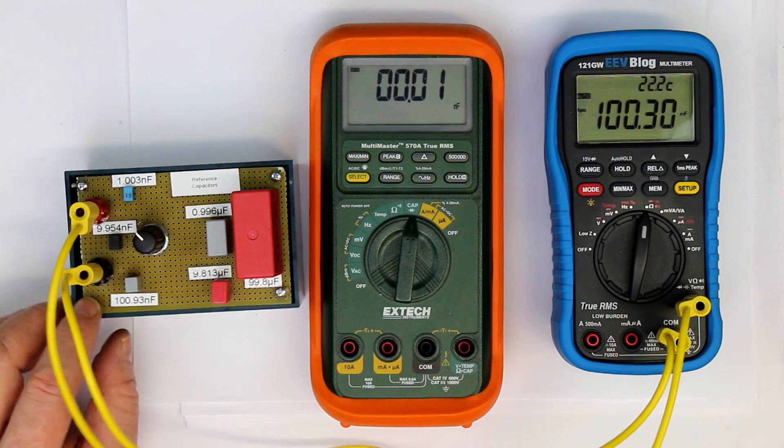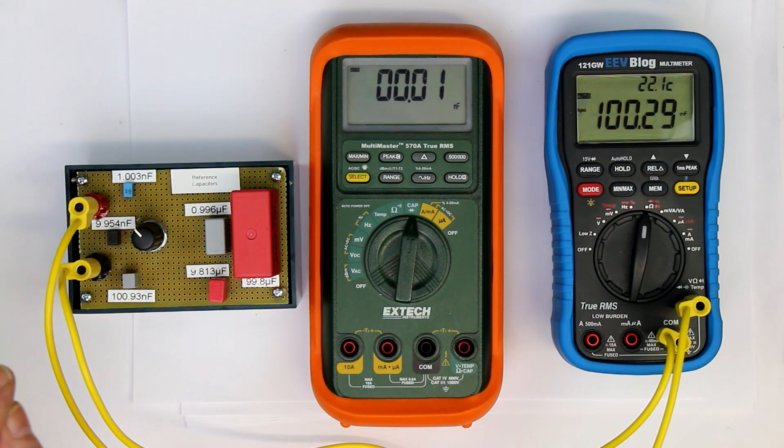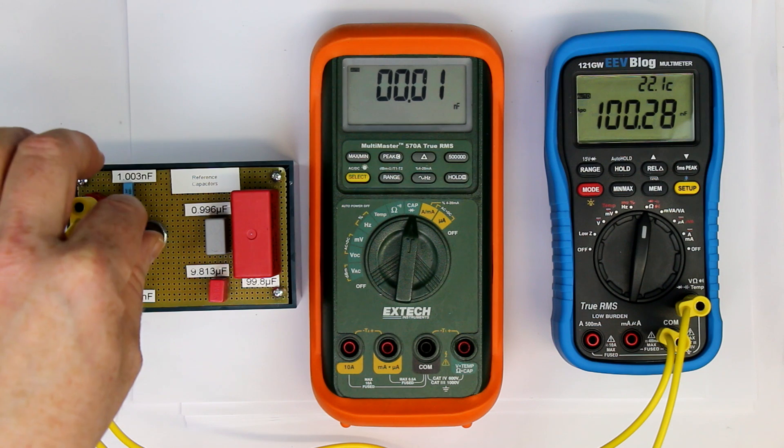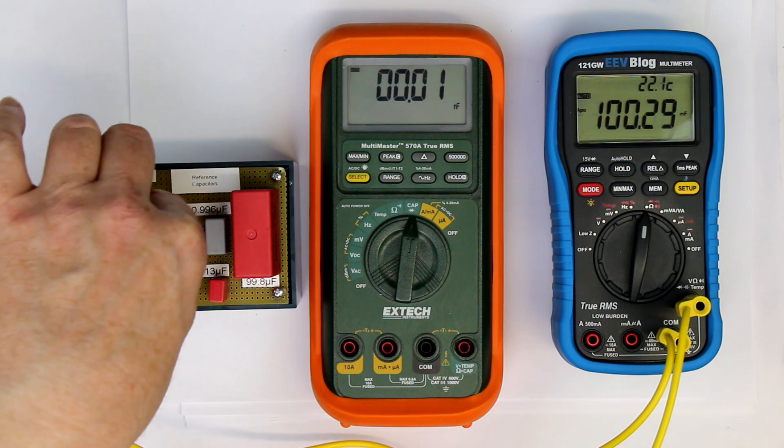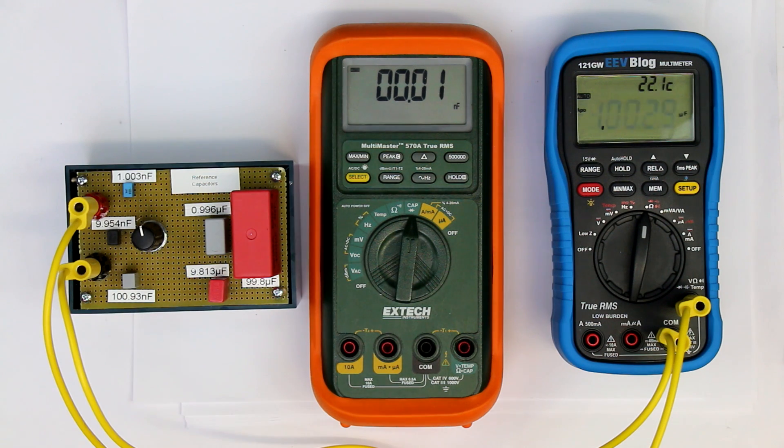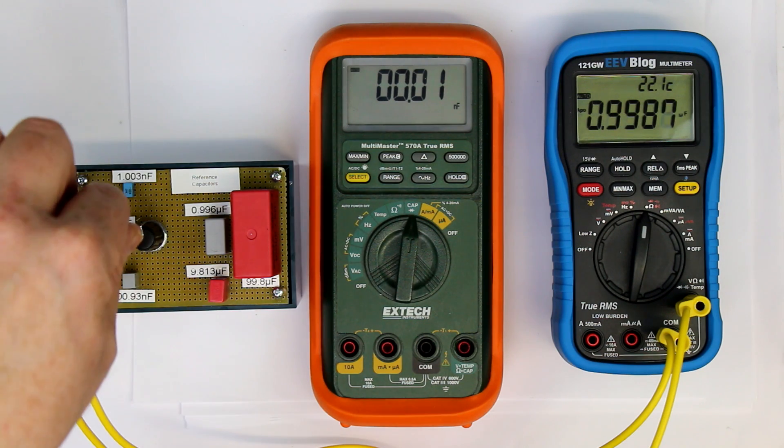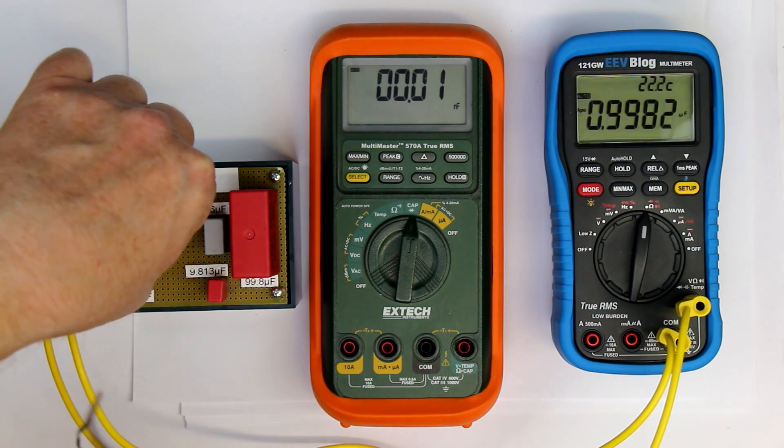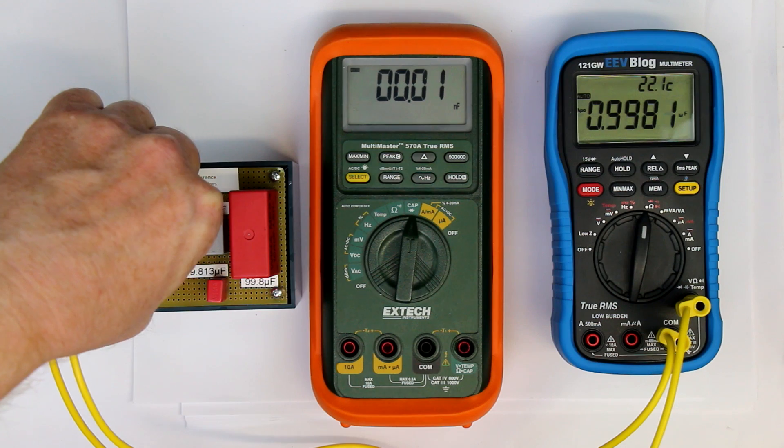Okay, let's go on. Again, we're, instead of 100.93, we get 100.28, so within 1%. Next value. Yep. One microfarad within better than 1% even.